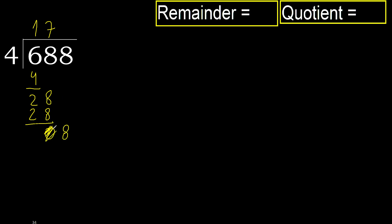Bring down, eliminate — next digit is 8. 4 multiplied by 3 is 12, which is greater. Multiply by 2 is 8, which is not greater. Subtract: 8 minus 8 equals 0.